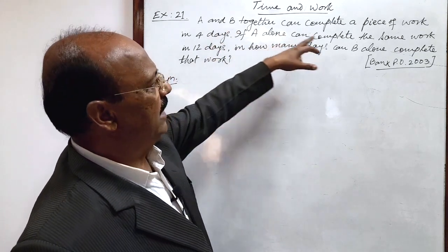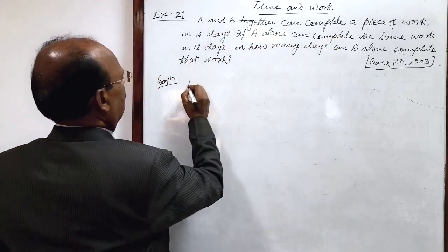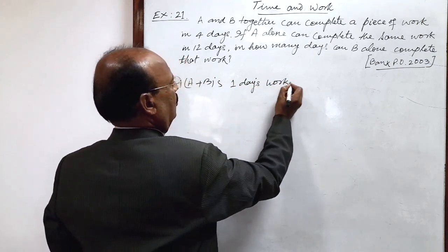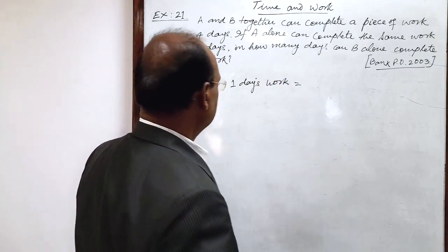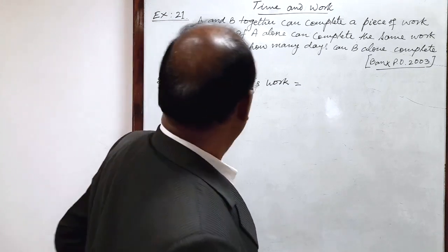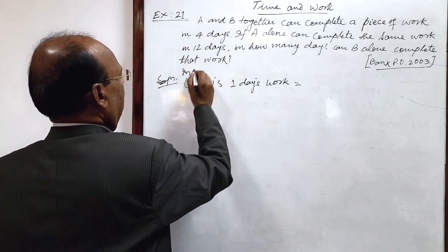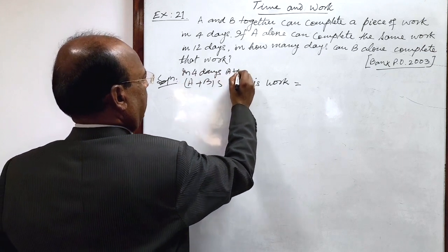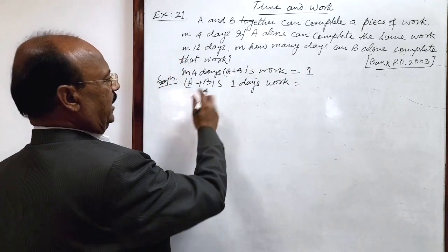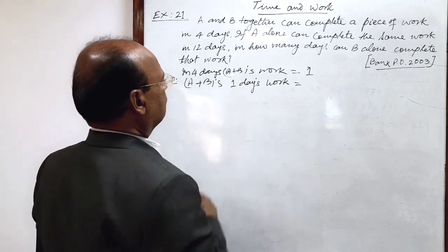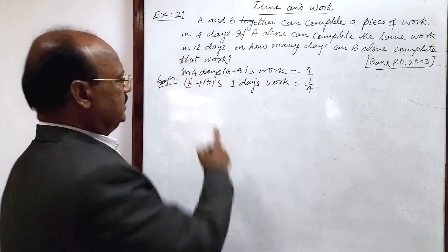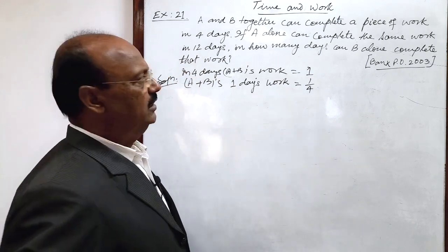And here given A and B together can complete a piece of work in four days. So here A plus B's one day's work is how much? One by four by unity method. We can write it very easily because in four days A plus B's work is one work. So A plus B's one day's work by unity method: in four days one work, so in one day one by four work. This is A plus B's one day's work is one by four.